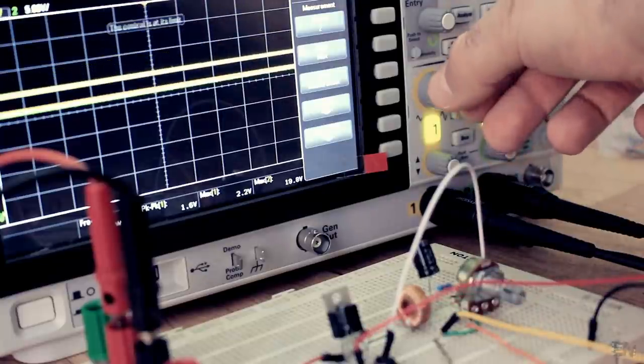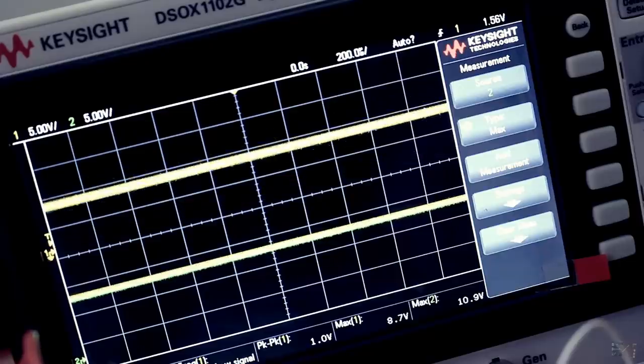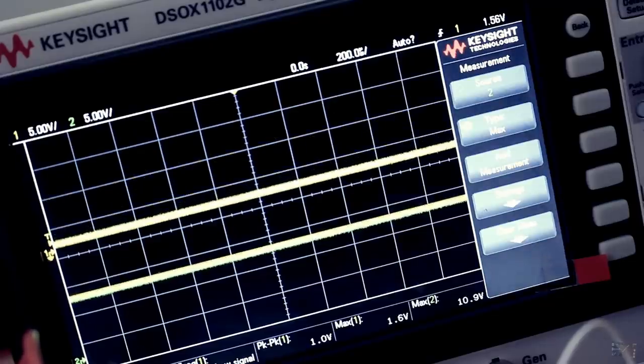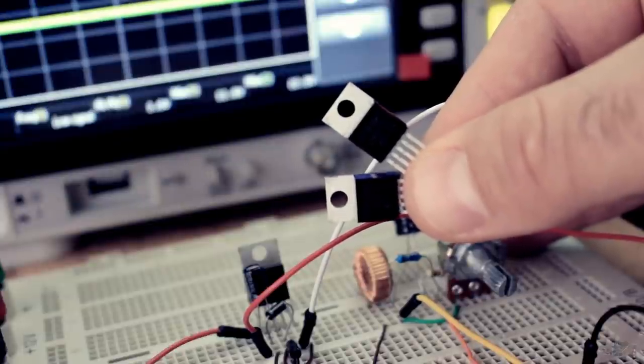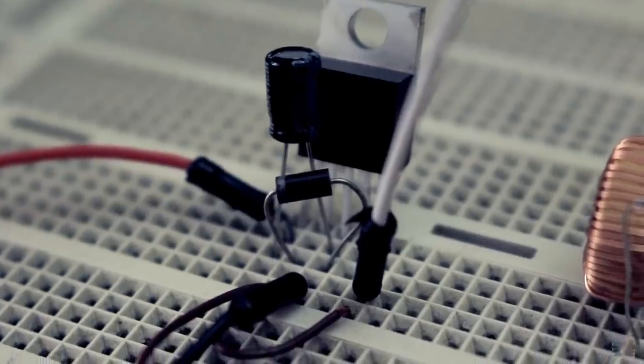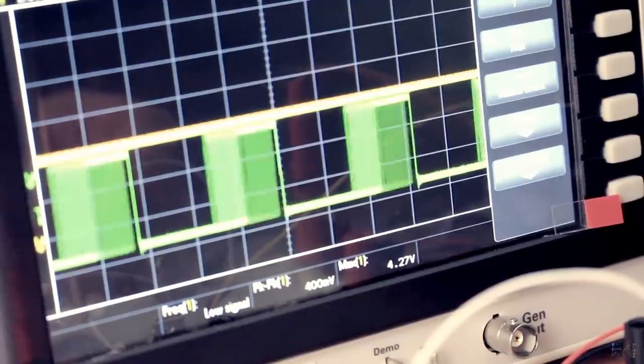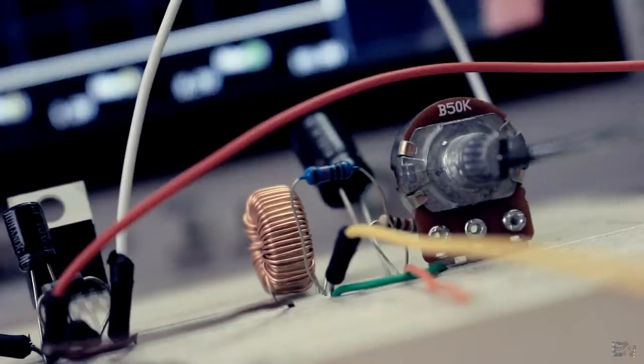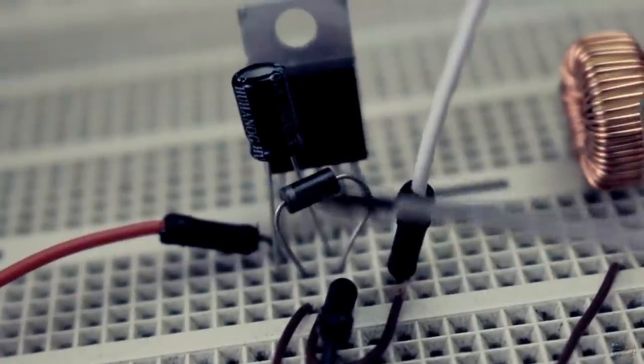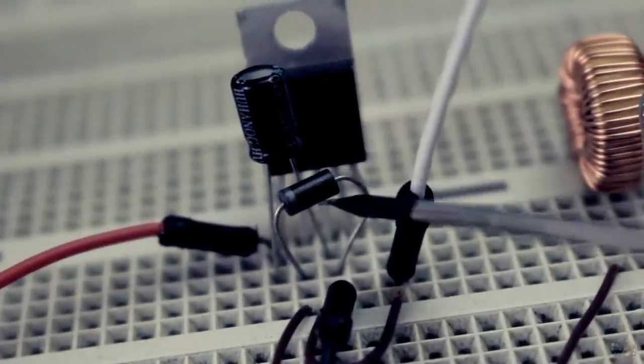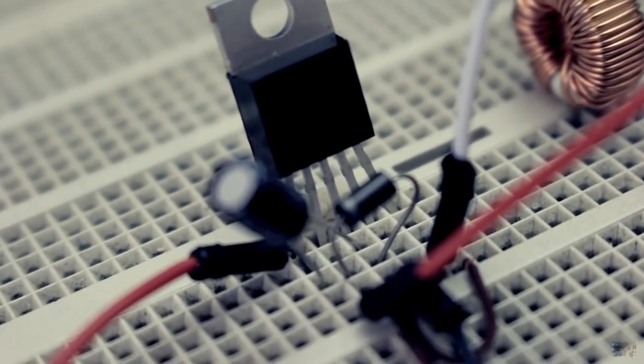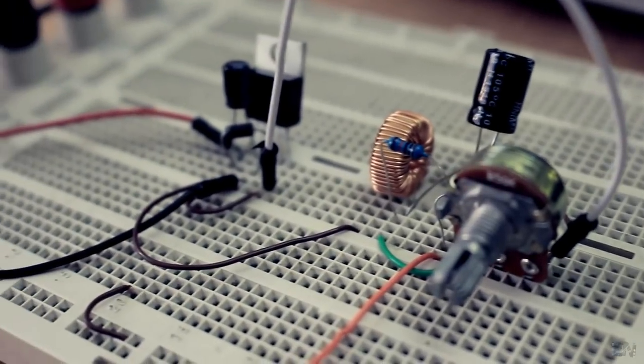In this case we don't need an external switch since the LM2576 IC already has one inside. With the feedback pin connected to the output voltage divider, the LM2576 IC will change the width of the pulse depending on the output in order to keep it constant. In this case use a Schottky Barrier Rectifier diode because it has a low forward voltage. This diode will leave the current flow when the switch is open.